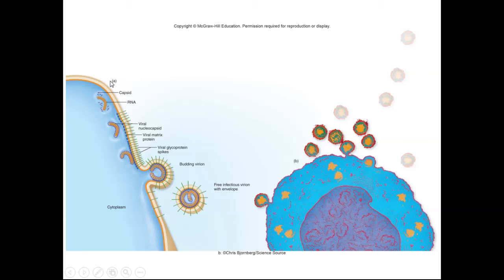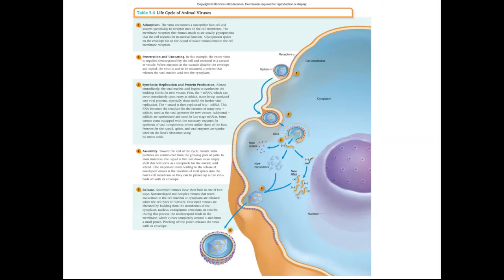Here's an electron micrograph artificially colored showing this exact process. And here's a nice summary slide from the textbook: we have absorption where the virus binds, then penetration, then uncoating where it releases its genetic information, then synthesis where it makes new subunits, then assembly where the new virion is made, and then release where the new virion is sent out to infect other cells within the host organism.